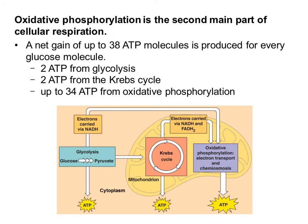If you've been keeping track of ATP molecules, here's a breakdown: glycolysis produces two ATP molecules — we spent two but gained four, so a net gain of two. We also got two ATP from the Krebs cycle, and we get up to 34 from oxidative phosphorylation, for a total of up to 38 ATP molecules. In many textbooks, you'll see a range from 36 to 38 ATP molecules per glucose molecule.